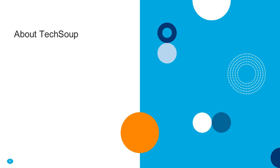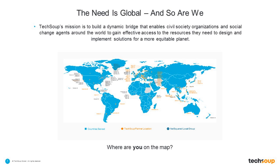Before we begin, a little bit about TechSoup. We are a nonprofit that is everywhere on the map that is blue in this picture. Feel free to chat in to let us know where you are joining us from today. Susan and I are located in TechSoup's headquarters in San Francisco, and Jeff is joining us from Redmond, Washington, where Microsoft is. We have folks joining from Brooklyn, New York, Pocatello, Idaho, New York, Grand Rapids, Michigan — all over the place. We have about 170 people on right now, so thank you all for joining us.